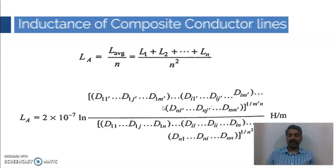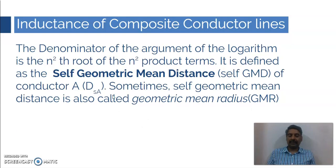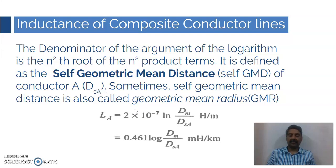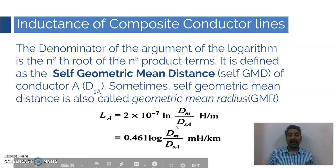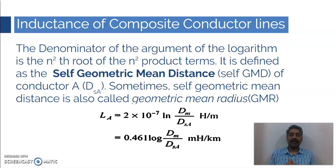If you replace all these terms with their equivalents — DSA in the denominator and DMA in the numerator — the equation reduces to a simple form, similar to what we derived for the single-conductor case. LA = 2 × 10⁻⁷ × ln(dm / DSA) Henry per meter, or equivalently 0.4611 × log(dm / DSA) millihenry per kilometer. This is how you calculate the inductance of composite conductor lines.